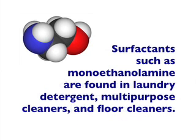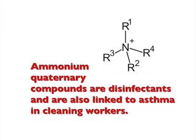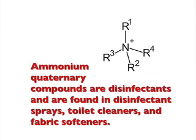Monoethanolamine is a surfactant found in laundry detergents, all-purpose cleaners, and many floor cleaners. Ammonium quaternary compounds are disinfectants, found in disinfectant sprays, toilet cleaners, and some fabric softeners.